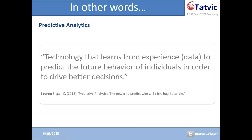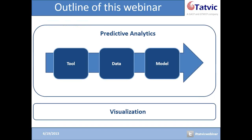Thank you very much for giving us this briefing and for telling us more about predictive analytics. But for a web analyst to perform a predictive analysis, what does this person need before building the predictive model? I will try to answer your question using an analogy. To perform predictive analytics, we need three basic things: tool, data, and model. Tool is like your vehicle, data is like your passenger, and model is like your route that you select to reach your destination.